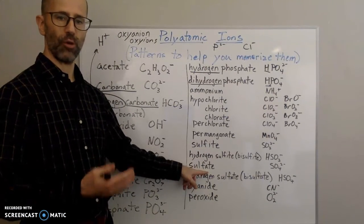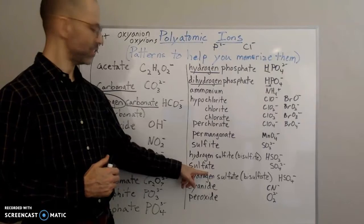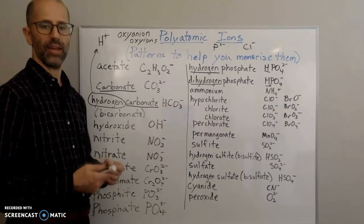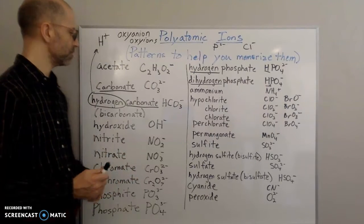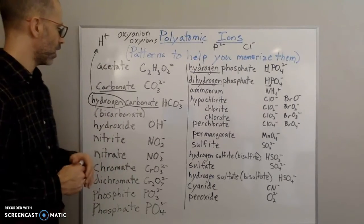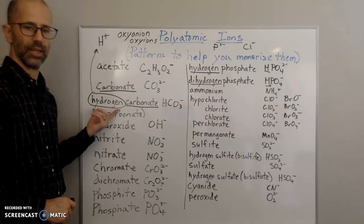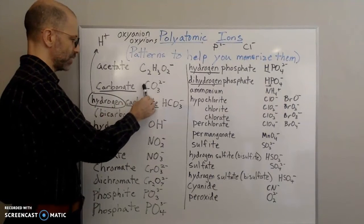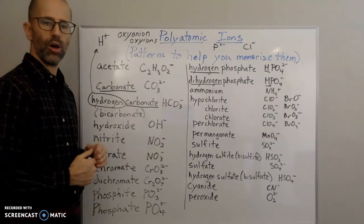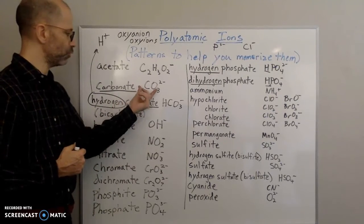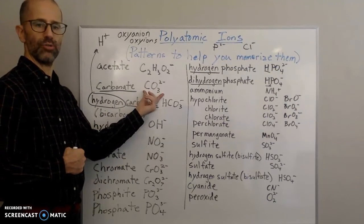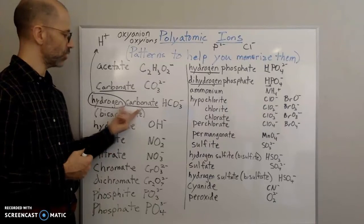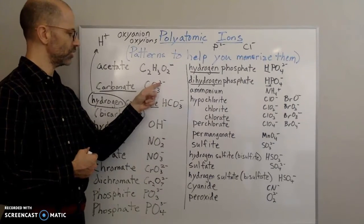Now, what about when you have hydrogen in the formula? If you remember that carbonate is CO3 2-, then all you're going to do is add hydrogen to it. So for hydrogen carbonate, you add hydrogen to the beginning of the formula, and it becomes HCO3. Look at the charge: it goes from 2- to 1-.